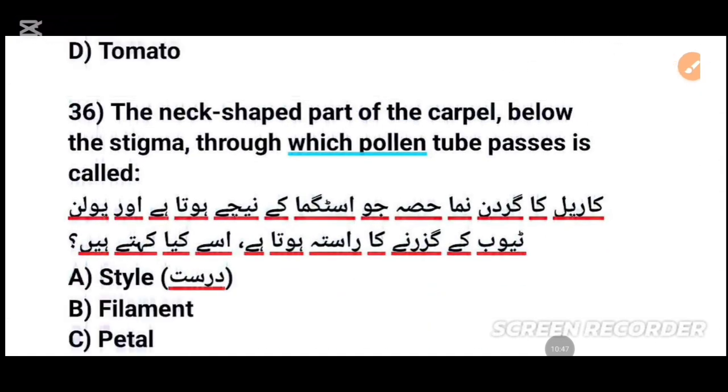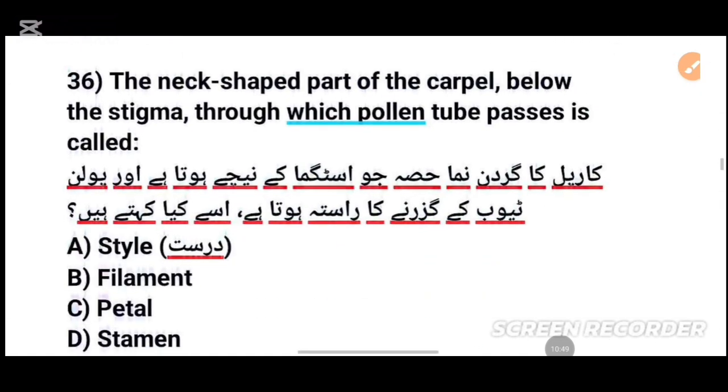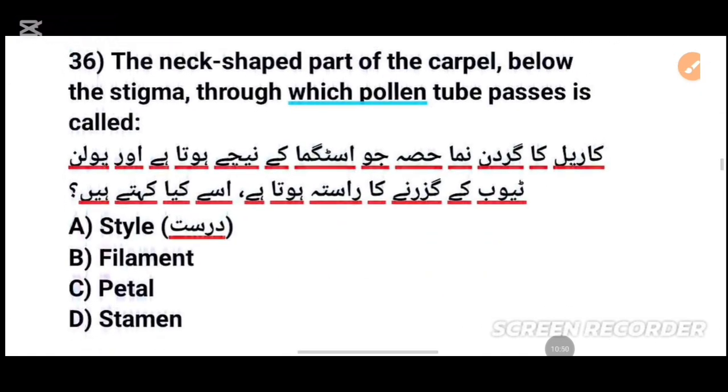MCQs number 36: The next shape — part of the carpel below the stigma through which pollen tubes pass — is called dash. Tick the correct answer.